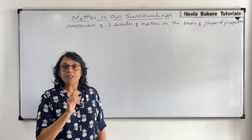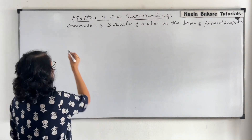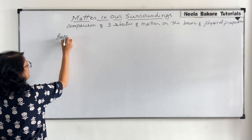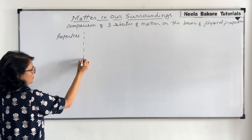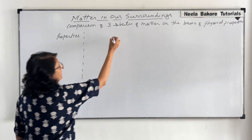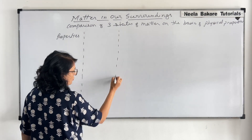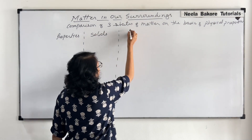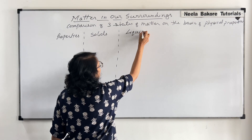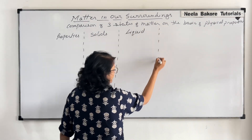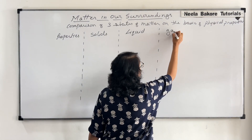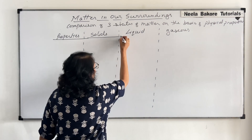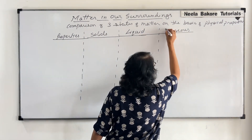Let us make a table in which the first column will list the properties on the basis of which we will be comparing. Then we will write about solids, the next state that is liquid, and the last that is the gaseous state — so, properties of solids, liquids, and gases.